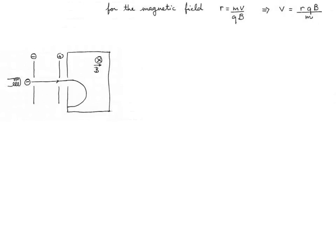While the particles are in the magnetic field, their trajectory has a radius equal to the mass of the particle multiplied by the speed, divided by the charge multiplied by the magnetic field. We can rearrange this equation to solve for the speed of the particles, which will be the radius multiplied by the charge multiplied by the magnetic field, divided by the mass.